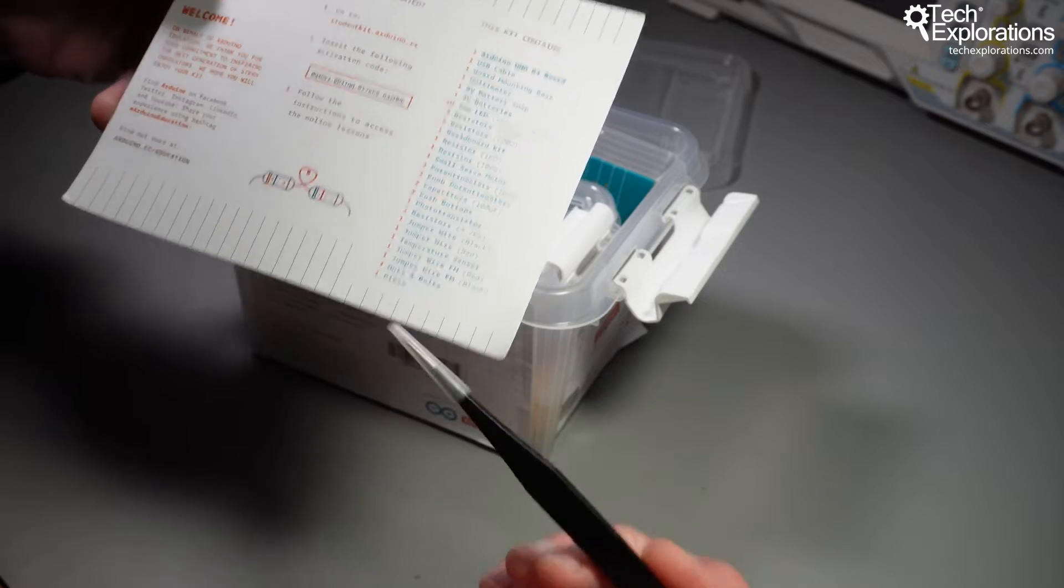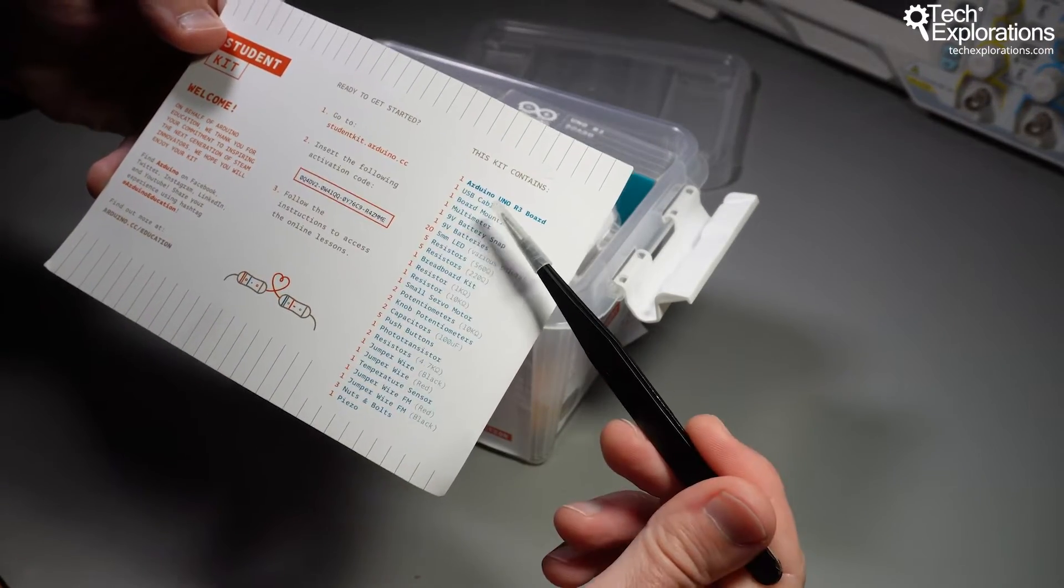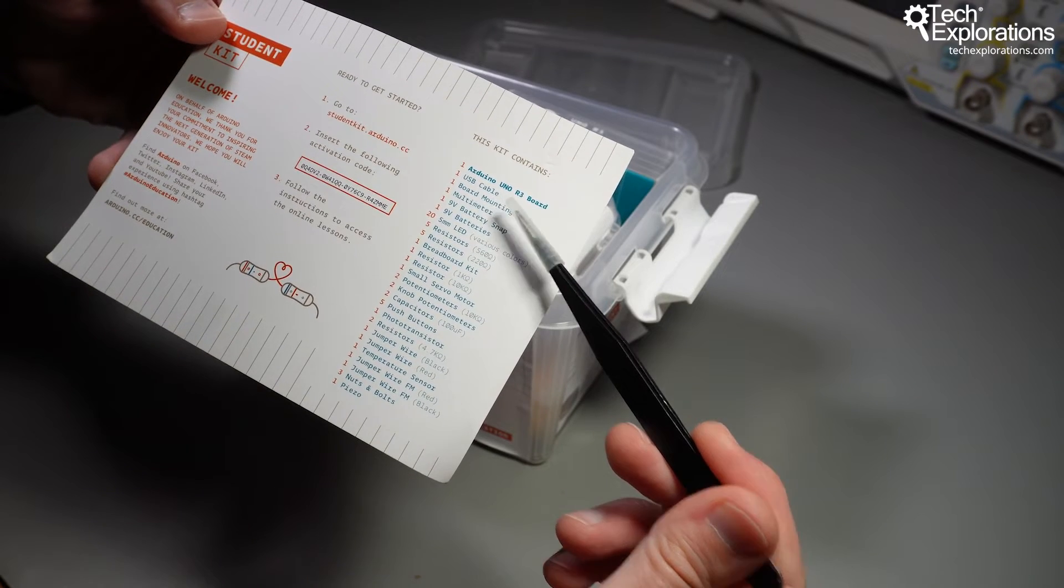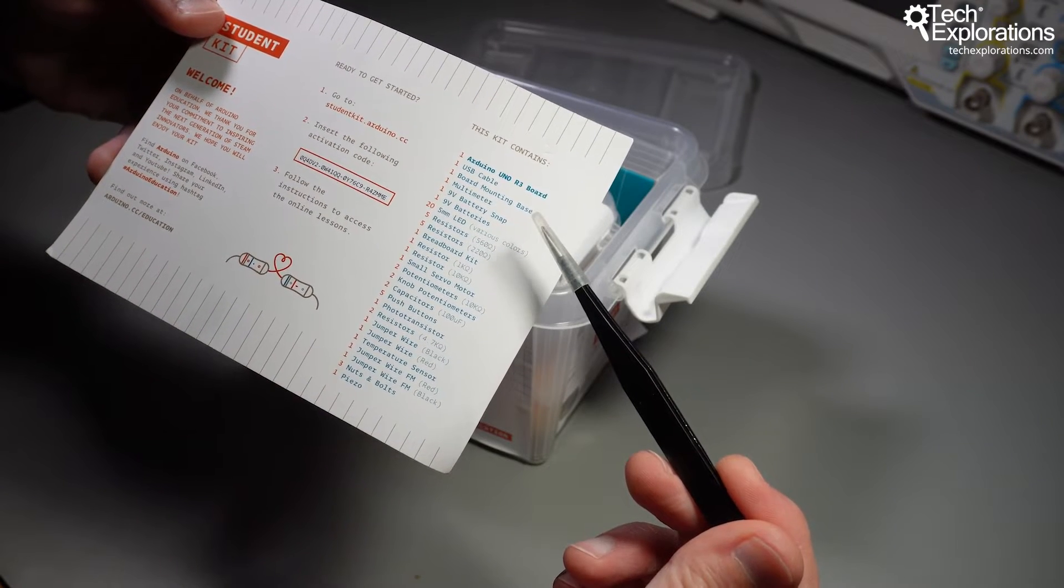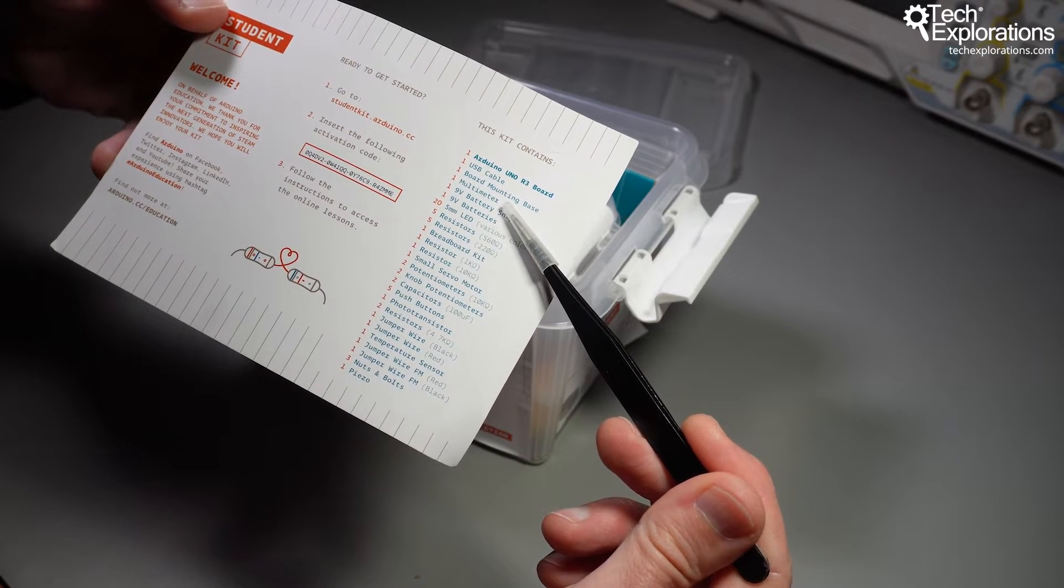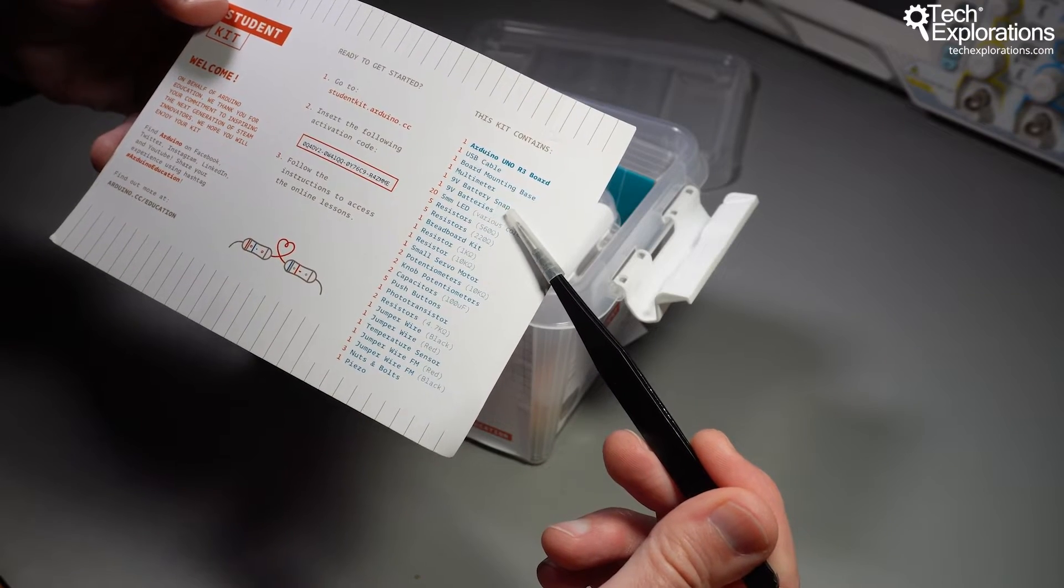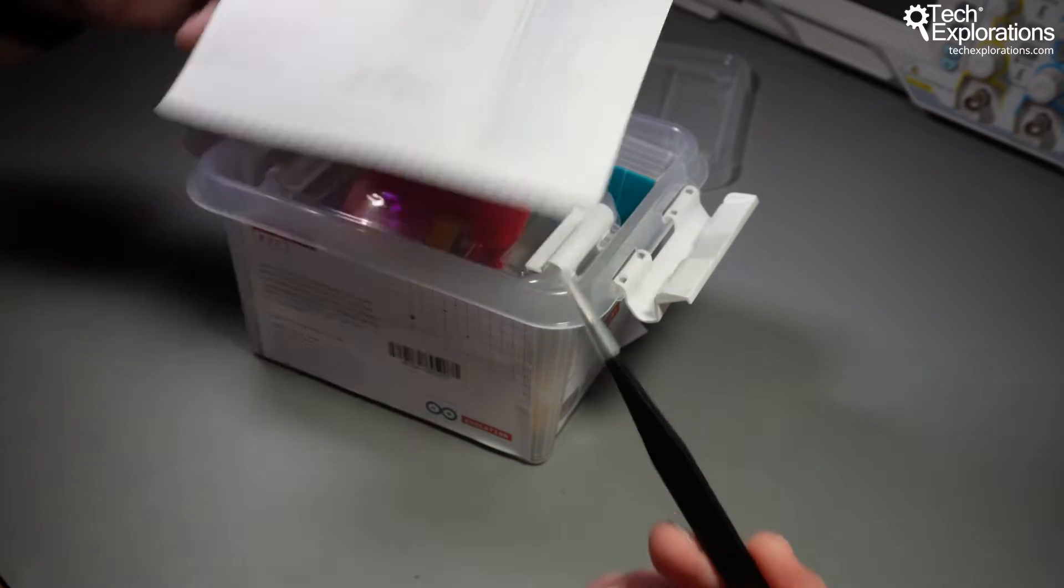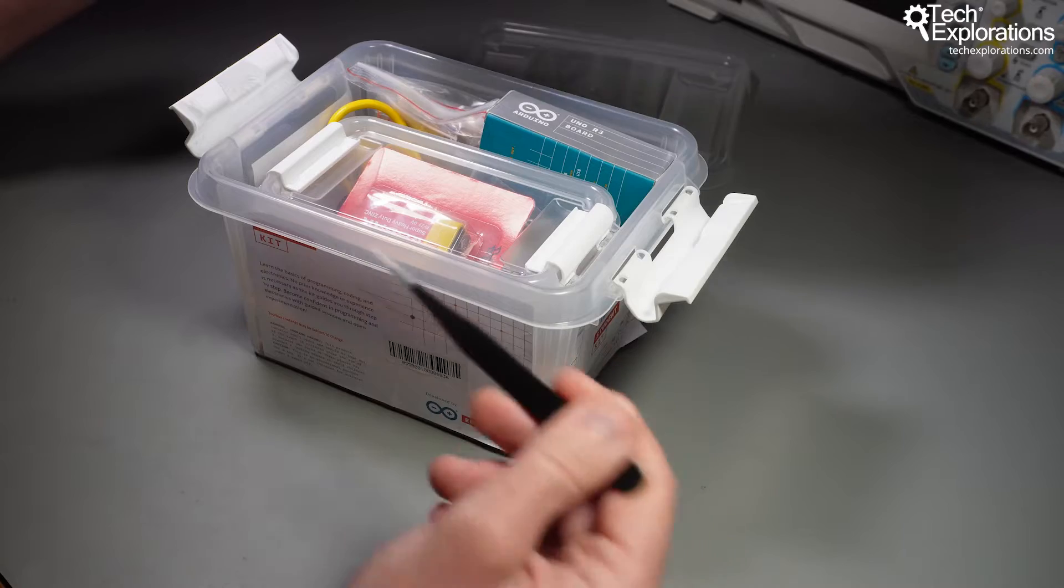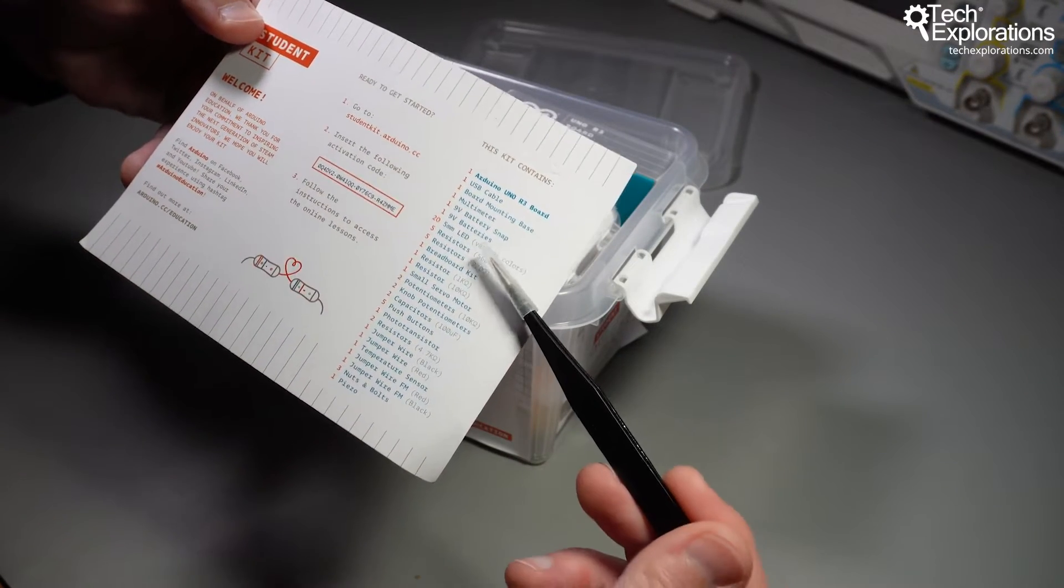Other things of note here, and we'll look at all of the components one by one, is of course a USB cable to connect the Arduino to your computer. There is a multimeter, very useful for simple electronic measurements such as resistance and voltage. There's also a 9 volt battery snap that allows you to power your Arduino independently of the computer so it doesn't need to be tethered. There's even a battery.